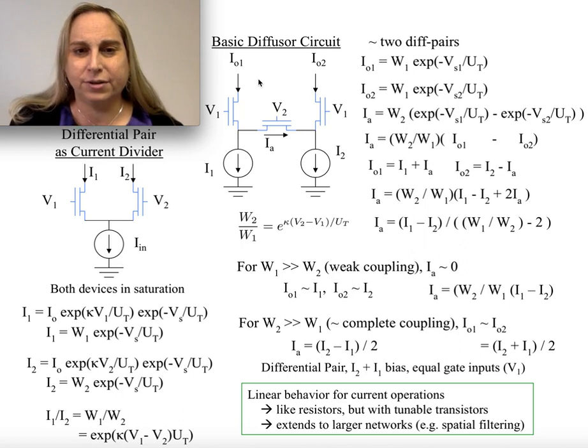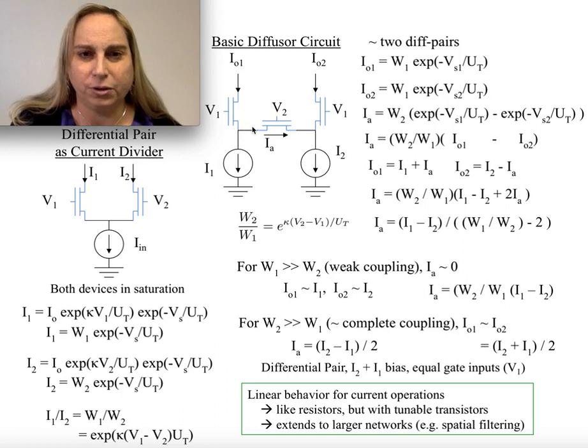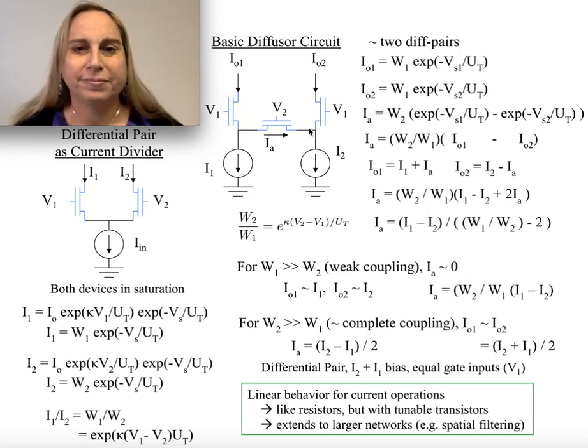But you might look at a case of going, I have now two input currents, I1 and I2, not just a single one. I still have two output currents, IO1 and IO2. I have two source nodes, VS1 and VS2. And now I could actually say, well, how do I write this?